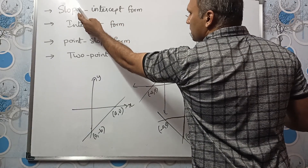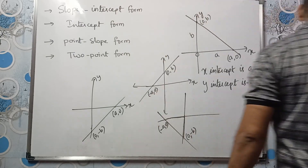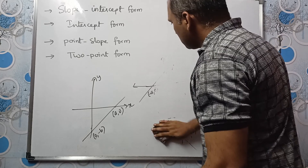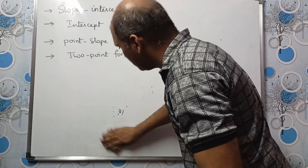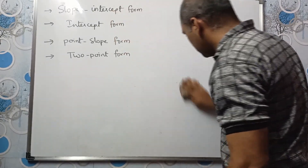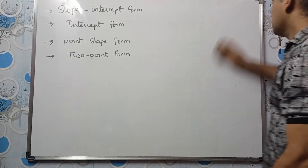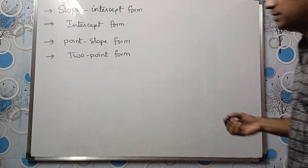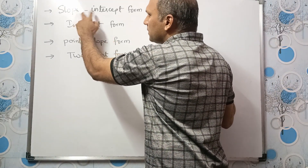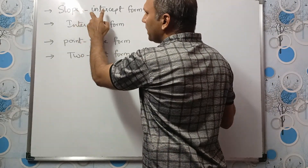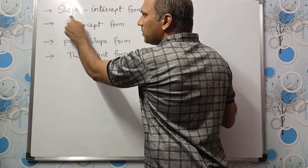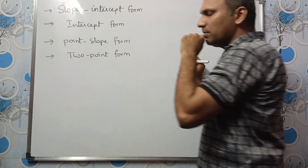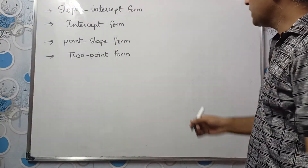Let us study about slope-intercept form. This concept is very easy. This is a very important chapter for intermediate. It is given in the name: slope-intercept form. So the slope of a straight line will be given and the y-intercept will be given.